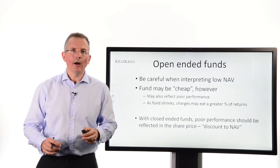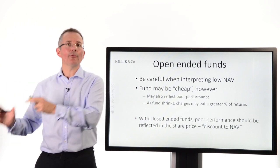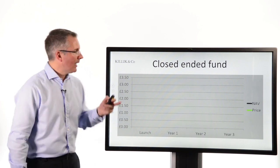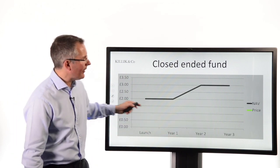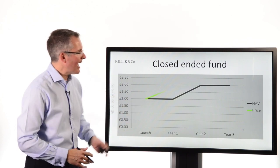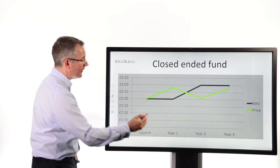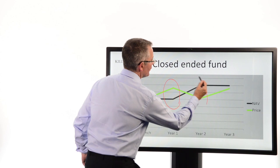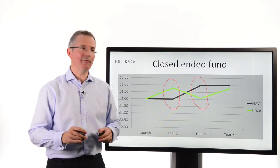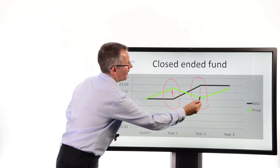With closed-ended funds, the mechanism for determining the overall view the market takes of the fund is slightly different. You get this idea of a discount or a premium to NAV. Here's a closed-ended fund I've made up — just three years of performance. There's the NAV: the assets held by the fund manager increasing gently over time. But there is the market capitalisation — the price per share determined by buyers and sellers — and you can see the two move apart, creating a premium here and a discount there.